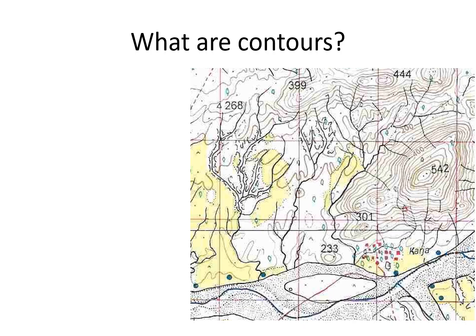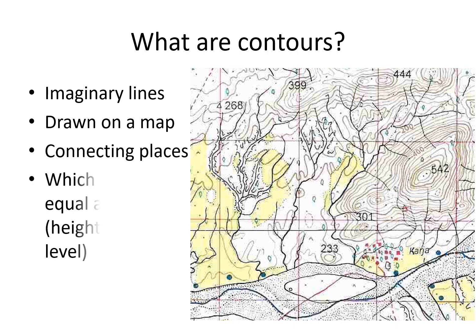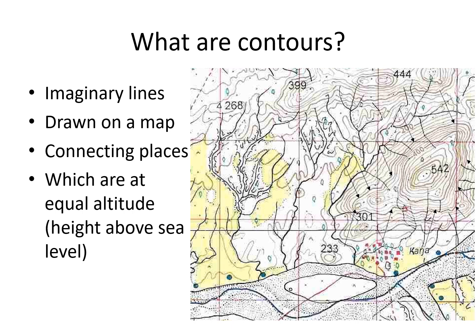Let us define contours first. Contours are imaginary lines which are drawn on a topographical map that connects places which are at the same height above sea level, or which are at equal altitude. This contour joins all places which are at 300 meters above sea level. Please remember, sea level is 0 meters, which is universal.